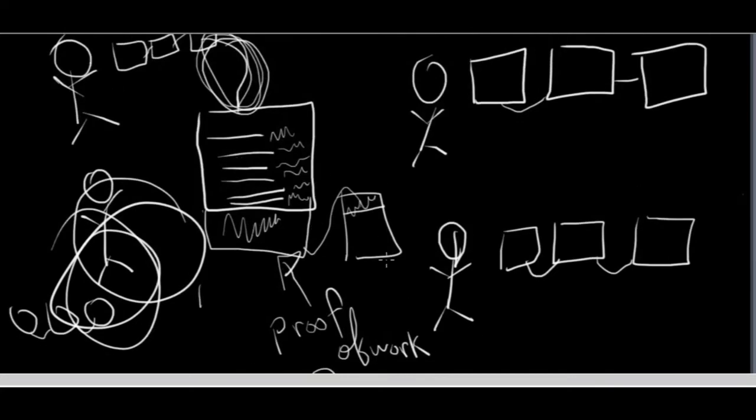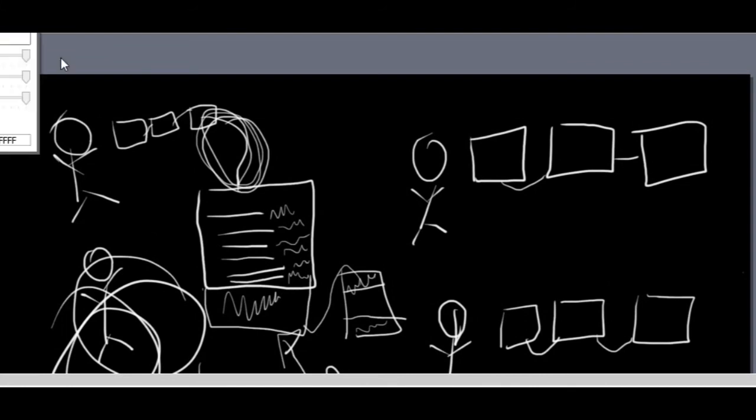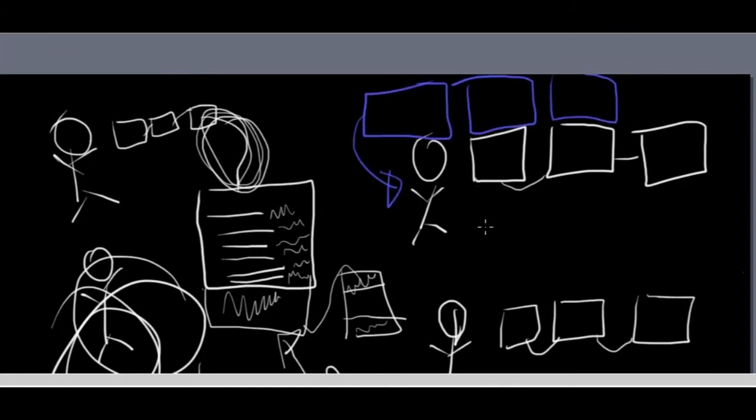But let's say your group of friends receives a set of blocks coming from a random location. They would probably not know what to do with it. So the rule goes this way. The longest chain is a legitimate chain.